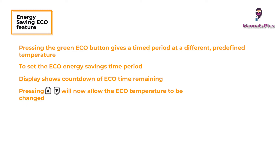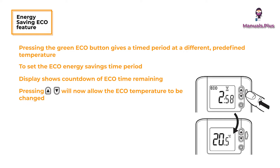This applies to the Honeywell EDT90E digital room thermostat models 004 and 005. To exit eco mode, press the eco button again. Next, we move on to installation.